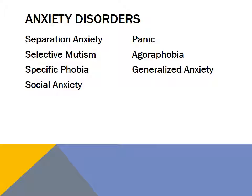These two states overlap, but they also differ, with fear more often associated with surges of autonomic arousal necessary for fight or flight, thoughts of immediate danger and escape behaviors, and anxiety more often associated with muscle tension and vigilance in preparation for future danger and cautious or avoidant behaviors.